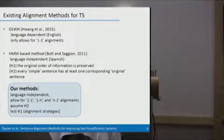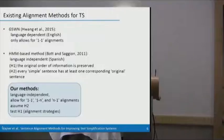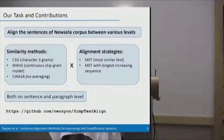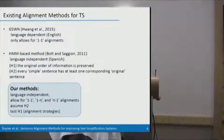What we have so far for sentence alignment for text simplification purposes, there is this NAACL paper by Hwang and his colleagues where they had a sentence alignment of English Wikipedia but it's language dependent. It uses dictionary and syntactic dependencies and only allows for one-to-one alignments. The state-of-the-art HMM-based method used in Simplext project for Spanish should be language independent and it has these two hypotheses that the original order of information is preserved and that every simple sentence has at least one corresponding original sentence. Our methods are language independent, allow for one-to-one and N-to-one alignments. They assume the second hypothesis and they test the first hypothesis. This is practically here in alignment strategies whether we use the first hypothesis or not.